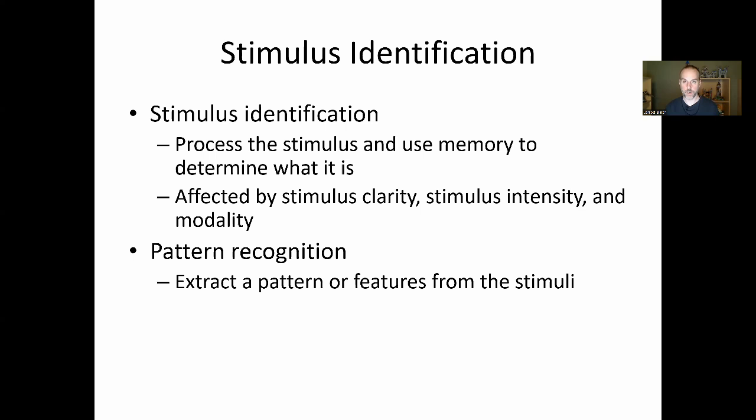An important part of stimulus identification is pattern recognition. When we see things in the world they're not individual stimuli. A baseball is round, white with red stitches, has a leather look — it's all those things together that tell us it's a baseball. So we're trying to identify patterns to identify objects.